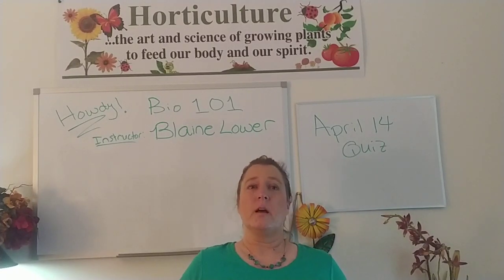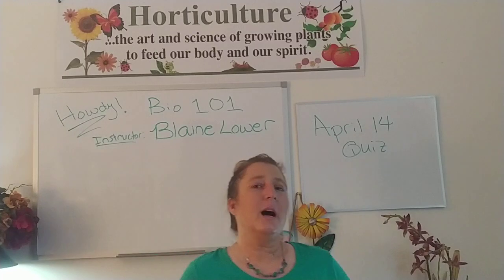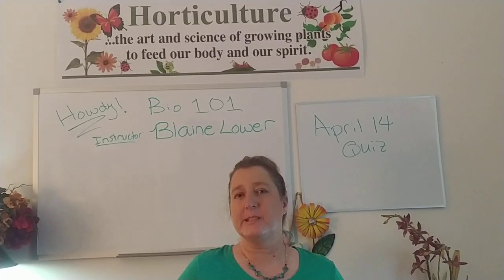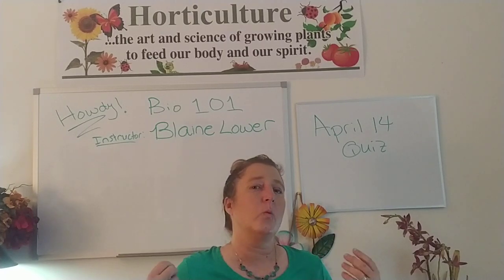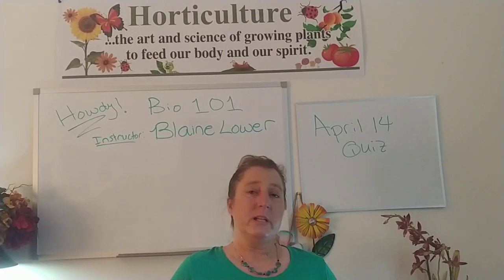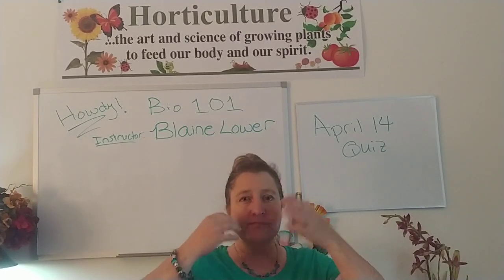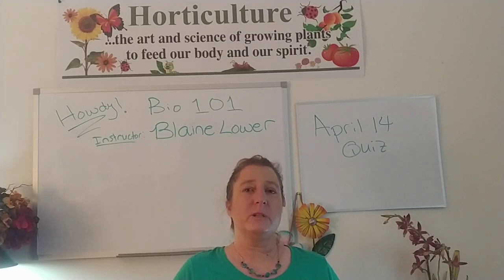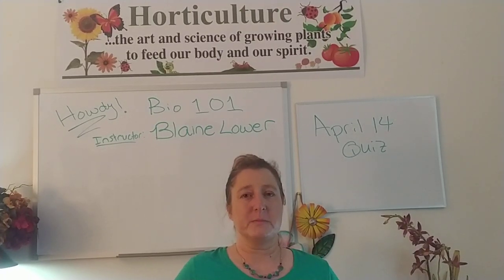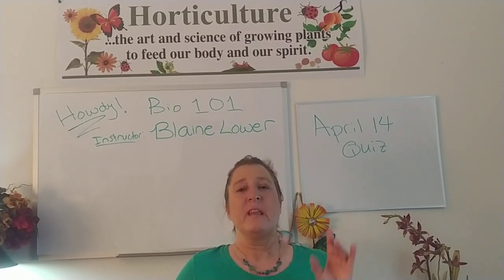Number four: why was cotton outlawed in the British Empire in the 1700s — to protect what? Number five: which plant did the Chinese discover could help with sinus problems? Which plant did the Chinese cultivate to help with those sinus problems? And then everybody else jumped on board with that because it works so well.